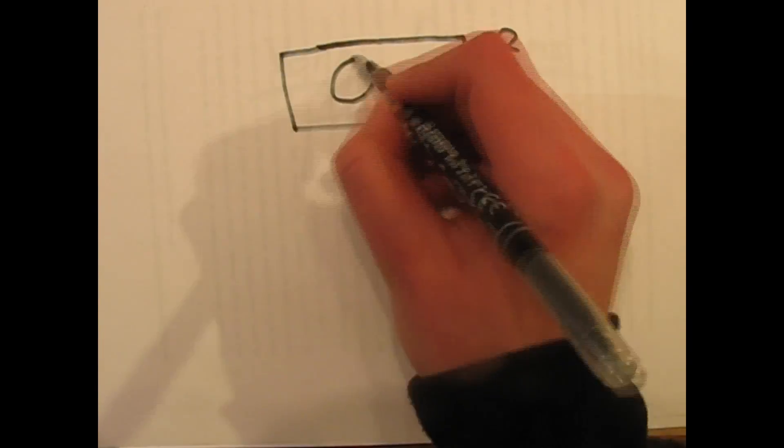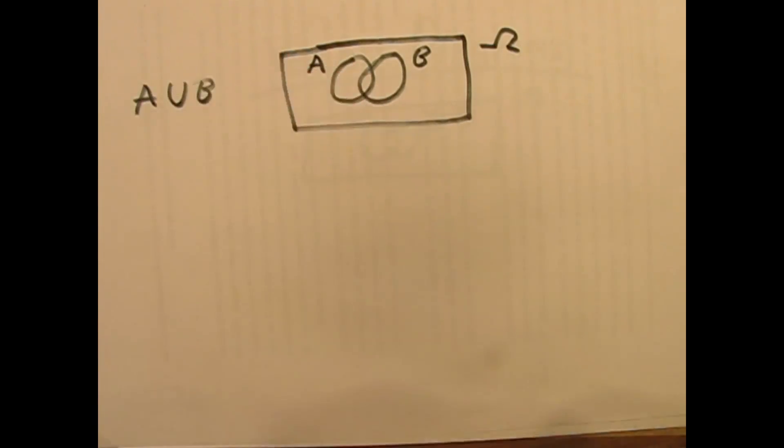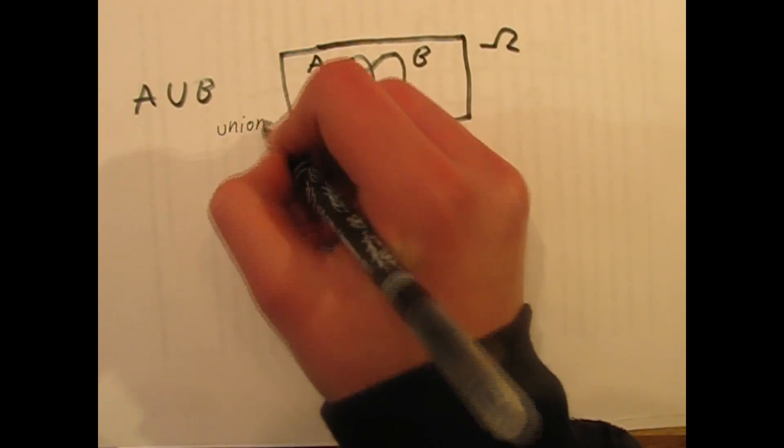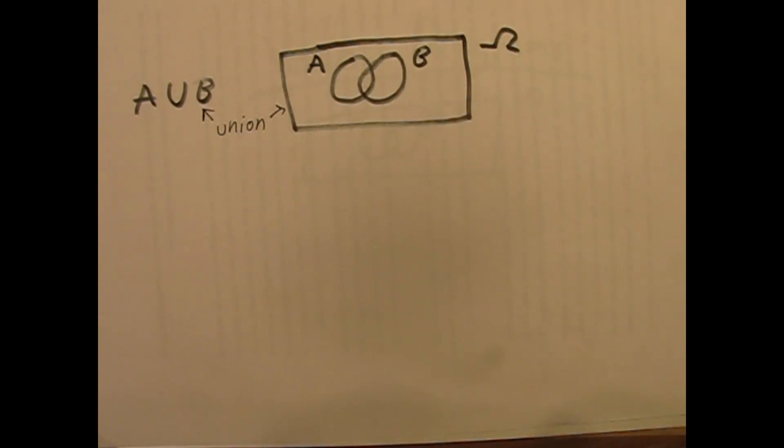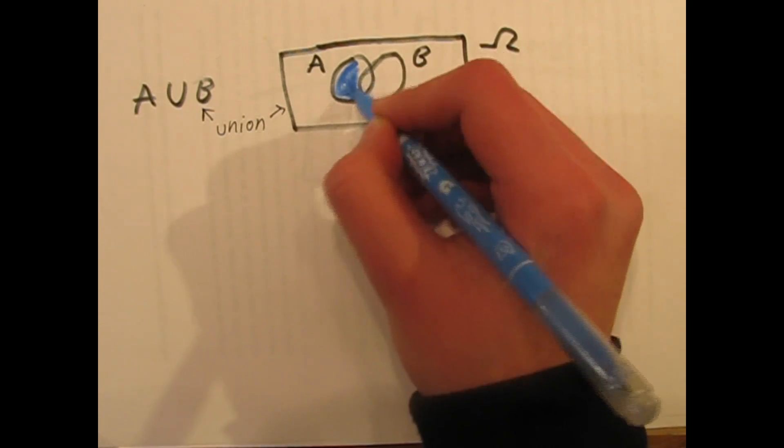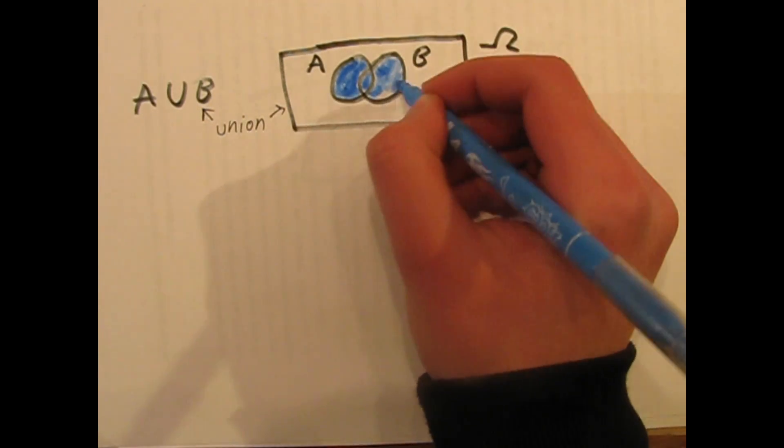You can also perform arithmetical operations with sets. For example, let's say that we have two sets, one named A and one named B. Then, all their components that are either in one, the other, or both sets, are called the union of these sets.